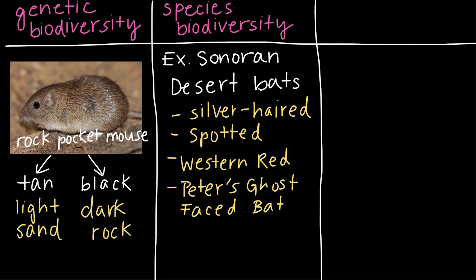Well, like genetic biodiversity, species biodiversity is super important, because having a lot of different species means that more roles can be filled in an ecosystem, which makes the ecosystem healthier.